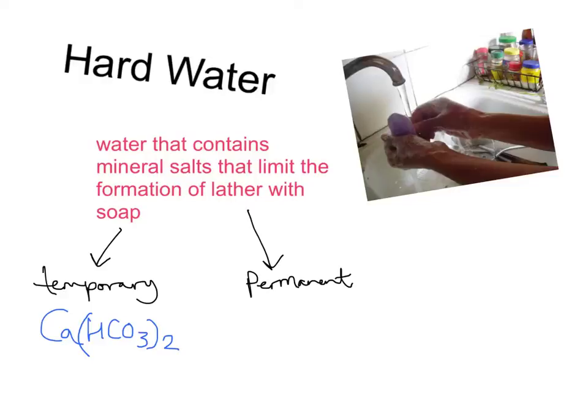Permanent hardness is caused by two other things, calcium sulphate and magnesium sulphate. So we'll put the formulas for those in. So you've got calcium and magnesium sulphates, and they give rise to what's called permanent hardness. And they can't be removed by boiling simply the water.